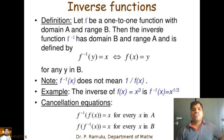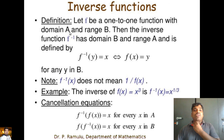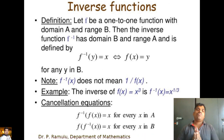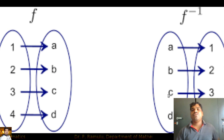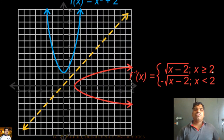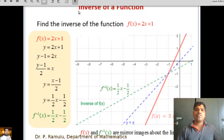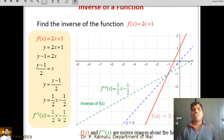Inverse Function. For an inverse function to exist, the function must be a bijection. Let f be one-one with domain A and range B. Then the inverse function f⁻¹ has domain B and range A, defined by f⁻¹(y) = x if and only if f(x) = y. Example: if f is bijection with 1→a, 2→b, 3→c, 4→d, then f⁻¹ maps a→1, b→2, c→3, d→4. Problem: Find the inverse of f(x) = 2x + 1. Set y = 2x + 1, so y − 1 = 2x, giving x = (y−1)/2. Therefore f⁻¹(x) = (x−1)/2 = x/2 − 1/2.